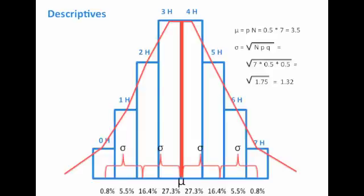You'll recall this diagram from our previous lecture when we finished lecture four. In this diagram, we had a mean of mu and we had standard deviations. We flipped a coin seven times and we looked at the possibility of getting no heads, one head, two, three, four, five, six, and seven.